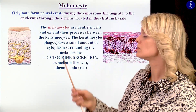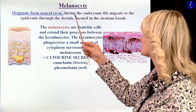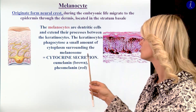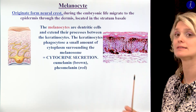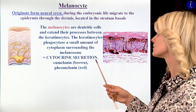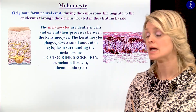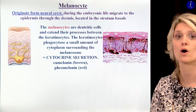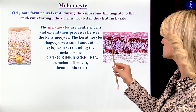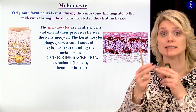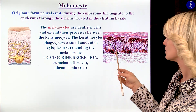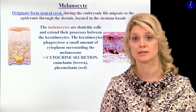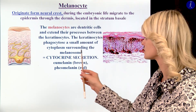The melanocytes originate from the neural crest. During embryonic life, they will migrate through the connective tissue, and finally they will go to the deeper part of the epidermis — they are located in the stratum basale. The function of these melanocytes is to produce the pigment called melanin. They have processes which extend towards the uppermost layer of the epithelium to the keratinocytes. The keratinocytes will phagocytose one little part of the process with the pigment. This is how the pigment will go to the upper layer of the epidermis — this procedure is called cytocrine secretion.